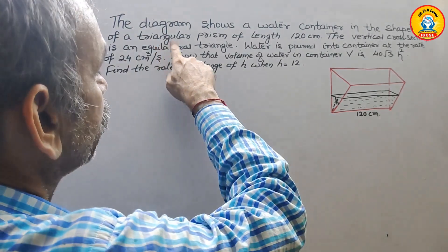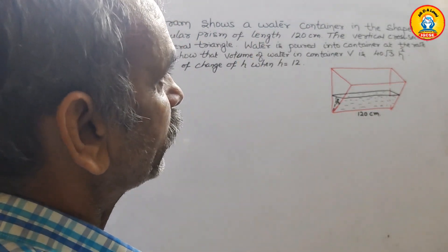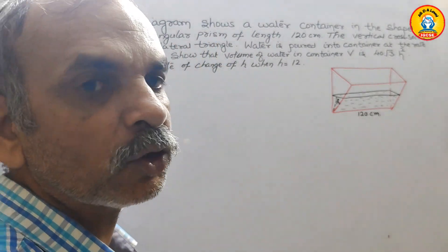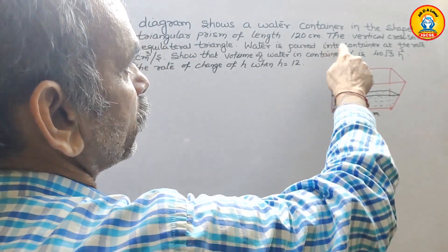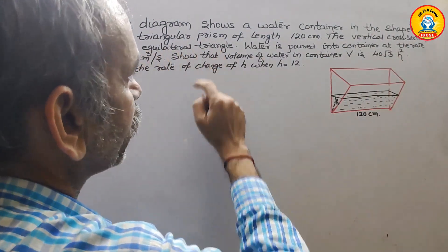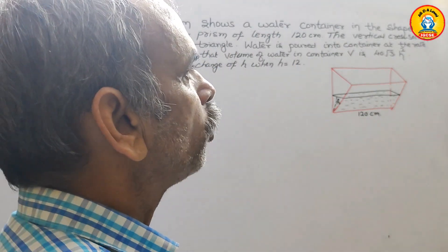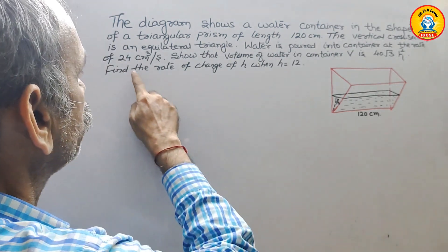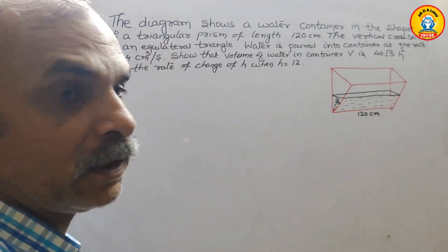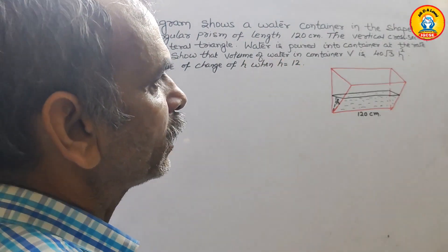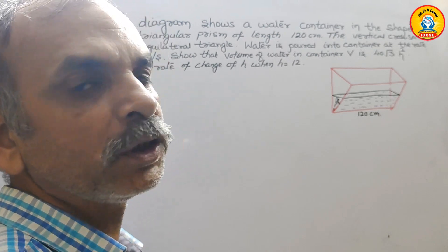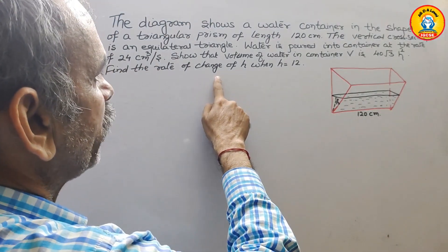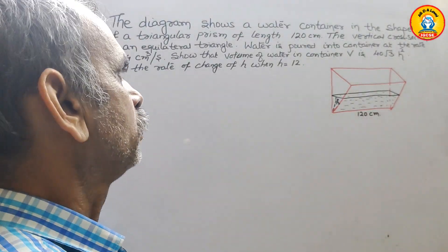The question states: the diagram shows a water container in the shape of a triangular prism of length 120 cm. The vertical cross section is an equilateral triangle. Water is poured into the container at the rate of 24 cm³ per second. First, show that the volume of water V equals 40√3 h². Second, find the rate of change of h when h equals 20.